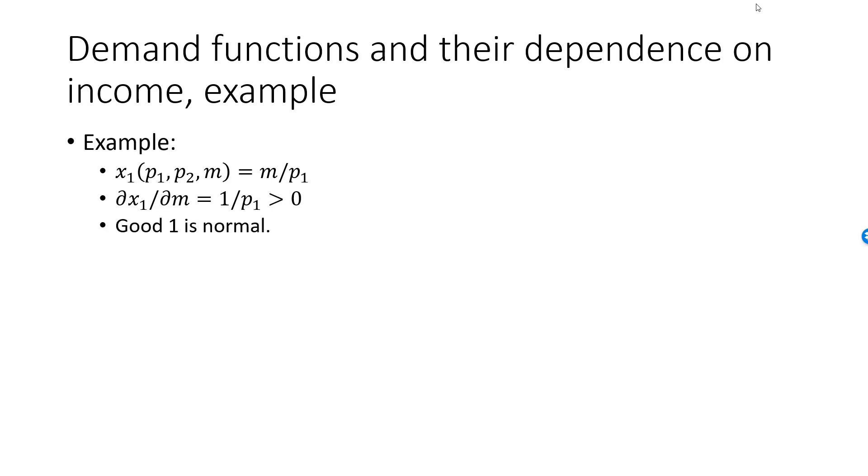In my second example, the demand for good 1 is given by 8m minus m squared divided by 10p1, if income is between 0 and 8. If we differentiate this function with respect to m, we get 8 minus 2m divided by 10p1.